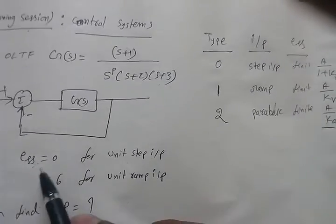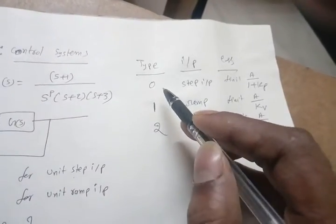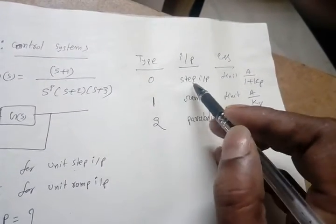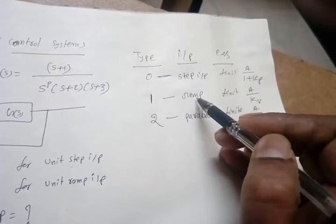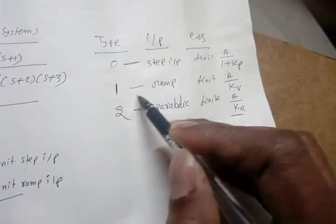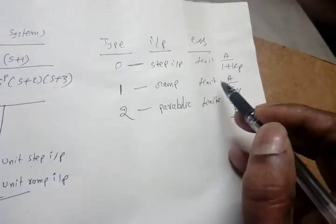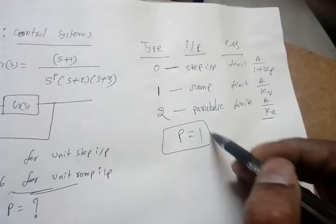So it is mentioned, steady state error is equal to 0 for unit step. That means steady state error is 0 for unit step, so from this, this should be matched to finite value. So whenever the unit ramp input is given, the type should be 1. That is, it should be finite. That means the P should be directly 1.